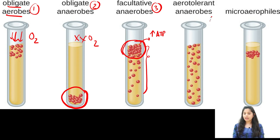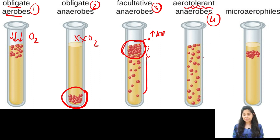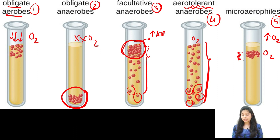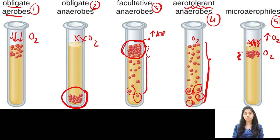Aerotolerant anaerobes are anaerobic microorganisms but unlike obligate anaerobes they will not die in the presence of oxygen — they can tolerate it to some extent and are equally distributed throughout the test tube. Microaerophiles need oxygen and cannot thrive in anaerobic conditions, but very high concentrations of O2 are poisonous to them, so they are present in the upper part of the test tube but not at the very top.